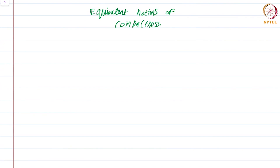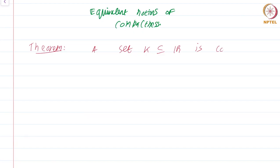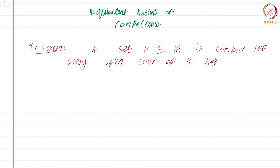In this module, I shall characterize compactness in terms of open covers. Without further ado, let me state the main theorem that we are interested in: a set K subset of R is compact if and only if every open cover of K has a finite subcover.